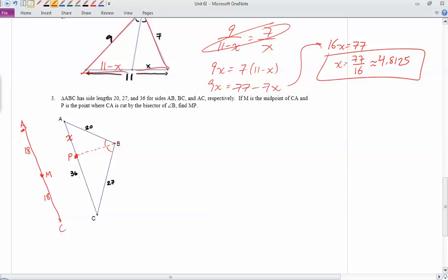So AP is X, which means PC, since the whole thing was 36, this is 36 minus X. So now we can do the out-in theorem thing again, the triangle angle bisector theorem. So if I go out from B to A, it's 20 and then back in. 20 over X equals, and then out down, 27 over 36 minus X. So I'll cross multiply. 20 times 36 minus X equals 27X. And then we'll distribute. So 720 minus 20X equals 27X. And then I'll add the 20X over. So I get 47X. And then I'll divide by 47. So X is approximately 15.319.